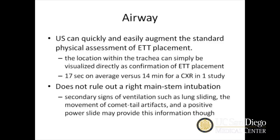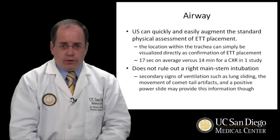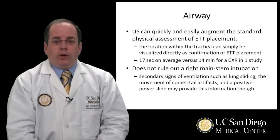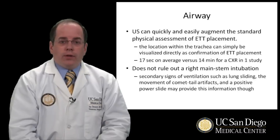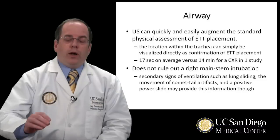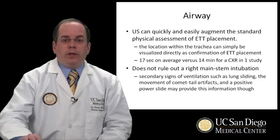Airway confirmation after intubation can be obtained using ultrasound. This is a new technique that's still subject to investigation, but it has been used to quickly augment the physical assessment of the endotracheal tube and to supplement methods such as end-tidal CO2. The location within the trachea can be visualized directly. In a study using this in comparison to chest x-ray, it took 17 seconds to confirm endotracheal tube placement within the trachea. It does not rule out that the tube has been placed too far, such as in a right main stem intubation, but secondary lung signs of ventilation such as lung sliding and cometail artifacts can sometimes give evidence that both lungs are being ventilated equally.